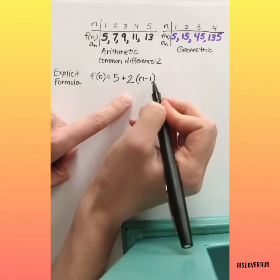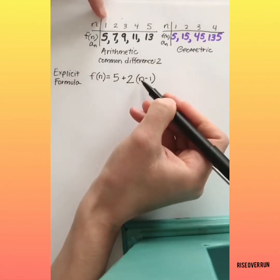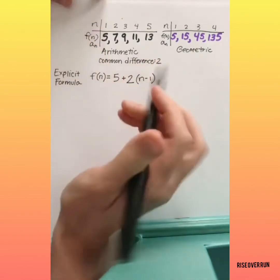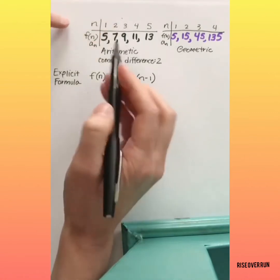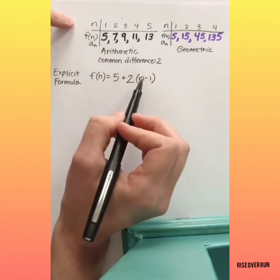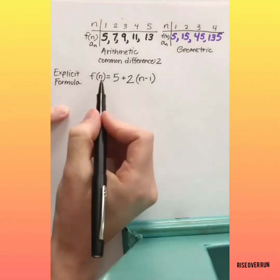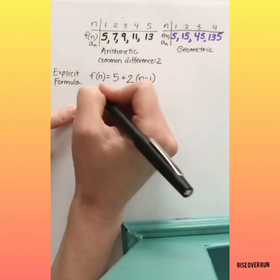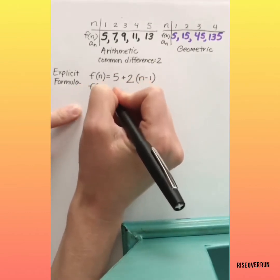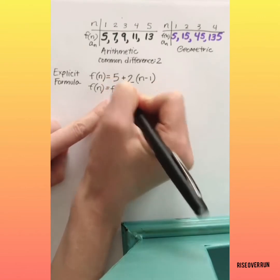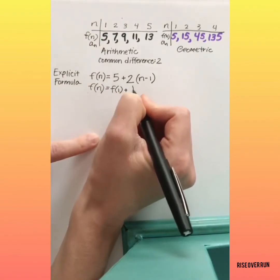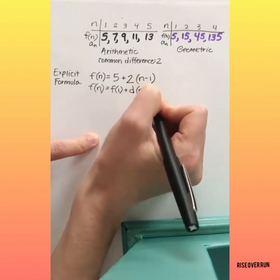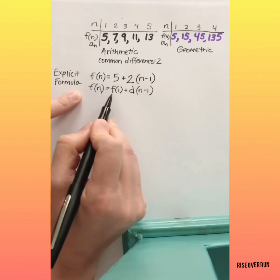Now let's think about why this works. For the first term, if we plug in a 1, we get 1 minus 1, which is 0. 2 times 0 is 0, so that gives us a 5 for the first term. That's why we have to do n minus 1 — that way we won't add a 2 for the first term. But once we start plugging in numbers for terms greater than the first one, we'll add a 2 every time. So the general format is: f of n equals your first term plus your common difference d times n minus 1.